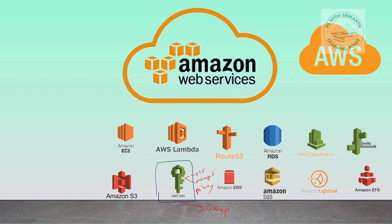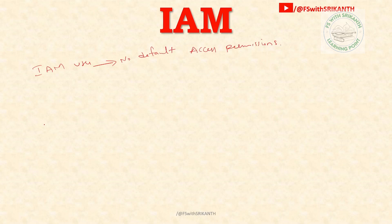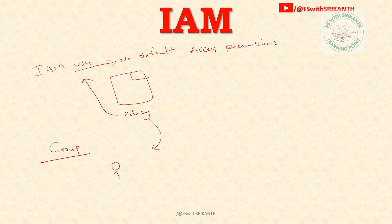Hello, in this lecture we are going to discuss IAM Groups. An IAM user does not have any default permissions — no default access permissions. So if you want to provide any permission to this user, you create a policy and attach it to the user. That's very simple. So what is a group? A policy is attached to multiple users — user one, user two, user three — so these three are under one single group.